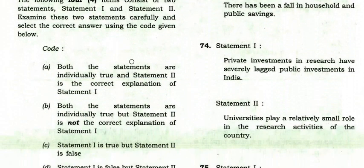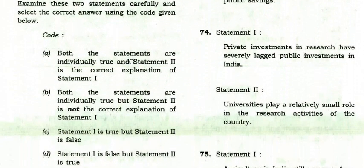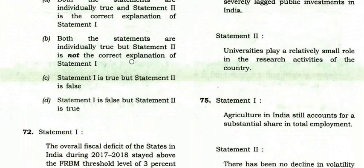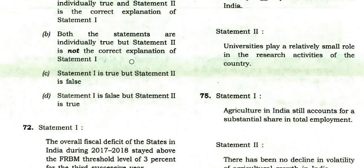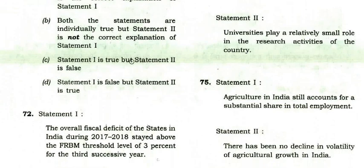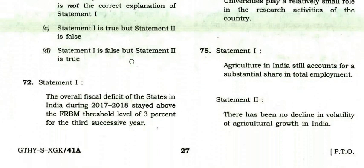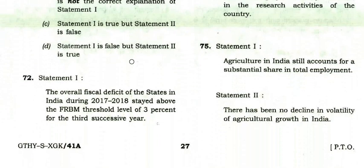Now the assertion-reason questions begin. The options are: A — both statements are individually true and Statement 2 is the correct explanation; B — both true but Statement 2 is not the correct explanation; C — Statement 1 is true but Statement 2 is false; D — Statement 1 is false but Statement 2 is true.